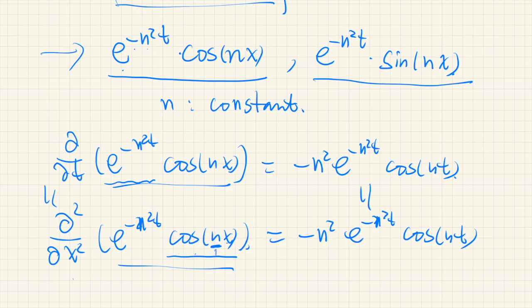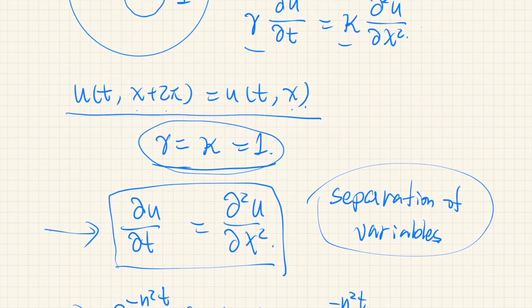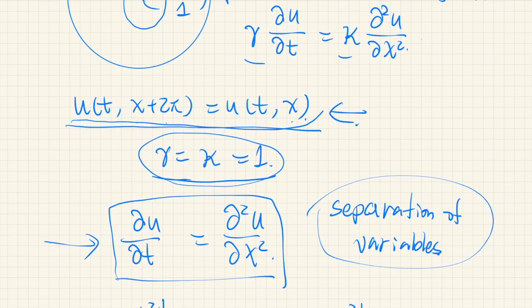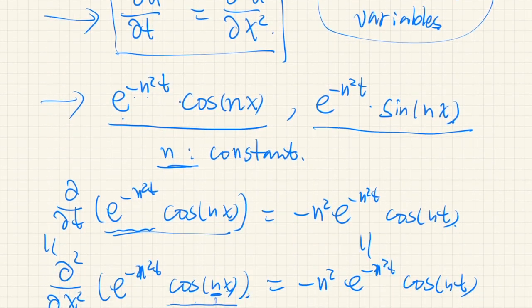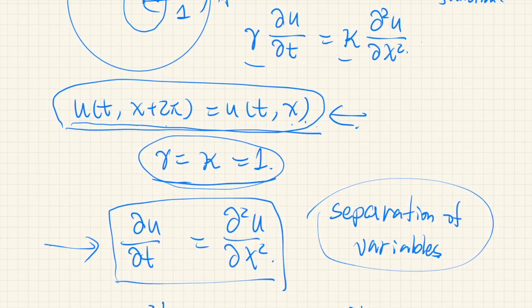But we are not done yet. Because this n, constant n, cannot be any value. Because we have this condition, this is called periodic boundary condition. So n must be chosen so that this condition is satisfied. Actually, that's very easy. If we pick n from integers, then we can satisfy this periodic condition.